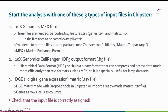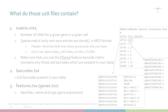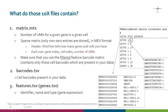Let's take a closer look at the 10x Genomics output files. Essentially you have three files and they need to be named correctly: the matrix file, barcodes, and features — which used to be called genes in older Cell Ranger versions. The main file is the matrix file, where you have the number of UMIs or transcripts for a given gene in a given cell.